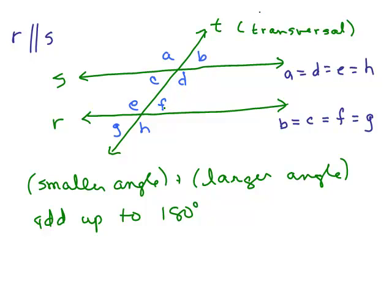So I could write here D and F, for instance, add up to 180. You could take any of the obtuse angle add it to any of the acute angle and it would add up to 180. So if I took B, for instance, I can add it to one of the larger angles like H and that should also be 180.